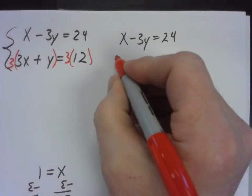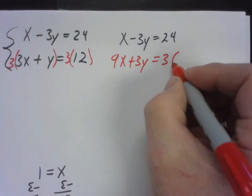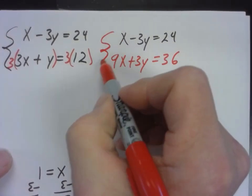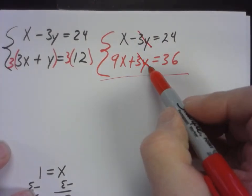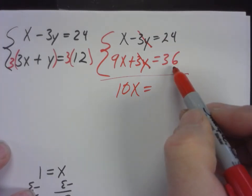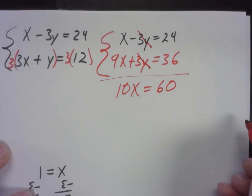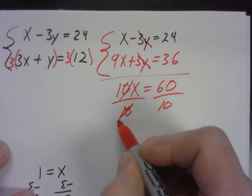And that gives me 9x plus 3y equals 36. So I have this new system. You with me? Jim, paying attention? So what's now going to happen when I add these two equations together? Yes, the y's are eliminated. And I end up with 10x equals 60. X equals 6.